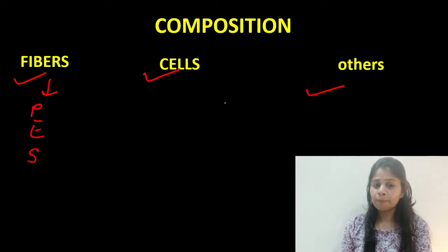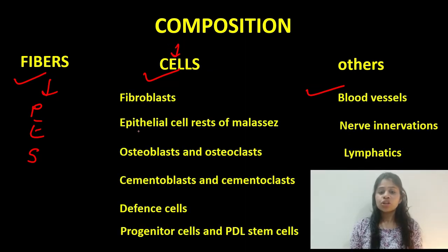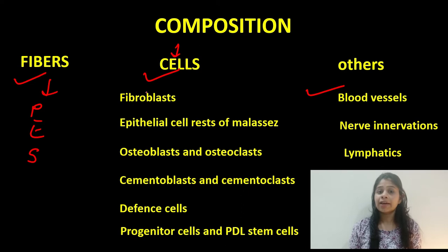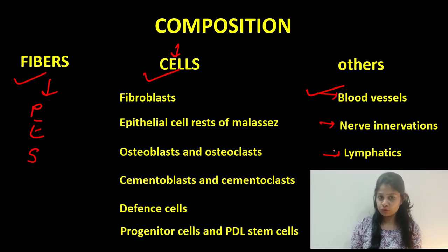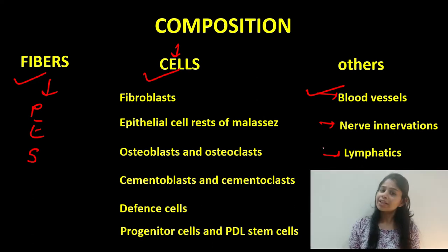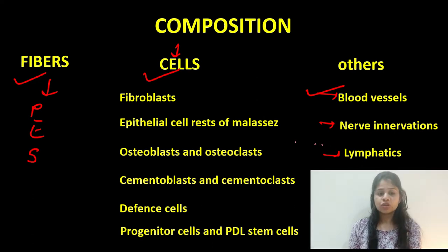The second component are the cells. There are numerous cells present in the periodontal ligament which facilitate the healthy functioning of the tissue. Apart from that, other agents such as blood vessels, nervous innervations, and lymphatics are also seen in the periodontal ligament space. Let's discuss the cells of the periodontal ligament.